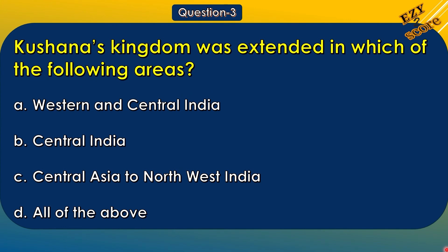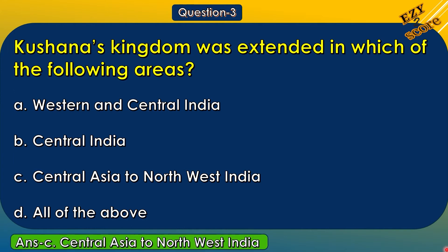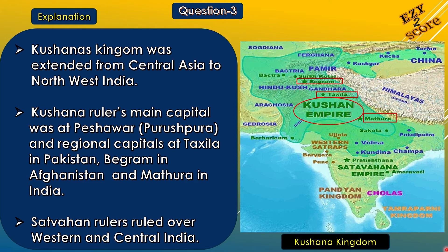Question 3: Kushana's kingdom was extended in which of the following areas? Options: A. Western and Central India, B. Central India, C. Central Asia to North West India, D. All of the above. The correct answer is option C, Central Asia to North West India. Kushana's main capital was at Peshawar, also called Purushpur, with capitals at Takshashila in Pakistan, Bergam in Afghanistan, and Mathura in India. On the map you can notice the Kushana kingdom extending from Central Asia to North West India, with its capital cities Bairgam, Takshashila, and Mathura.